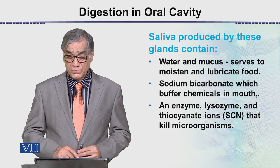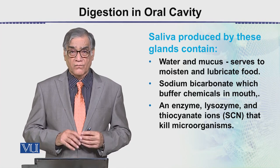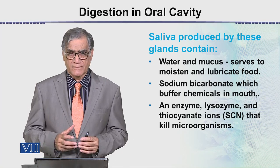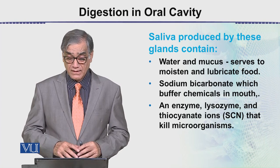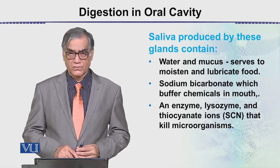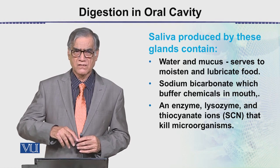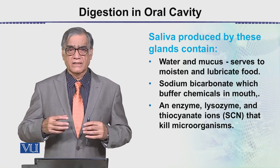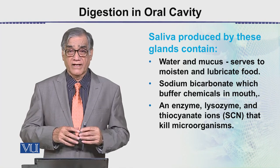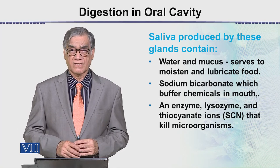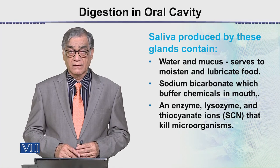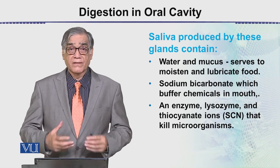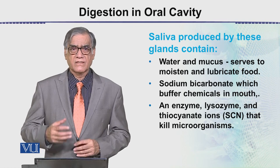The saliva produced by these glands contains water and mucus. Mucus is something which is very slimy and serves to moisten and lubricate food. Just as oiling is done for rough machinery, the food or bolus is first lubricated by the mucus, making it easier to move through the digestive tract.